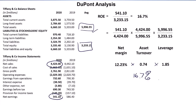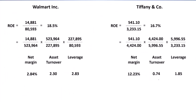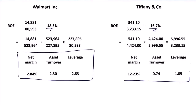Now, certainly in the exam there are questions that just ask you to do those calculations. But much more interestingly, you could be asked to interpret and analyse — to use the 'A' of CFA. That's where the fun begins. Here, we have them side by side: Walmart 18.5%, Tiffany 16.7%. Similar, but very different ways of getting there. Once you look at the DuPont analysis, you'd never say similar ROEs means similar businesses — they're markedly different. The most striking difference is in margins: Tiffany 12.23%, Walmart only 2.84%. Which, to a certain extent, you would have expected — a high-end jewellery store should have a higher margin than a mass retailer like Walmart.